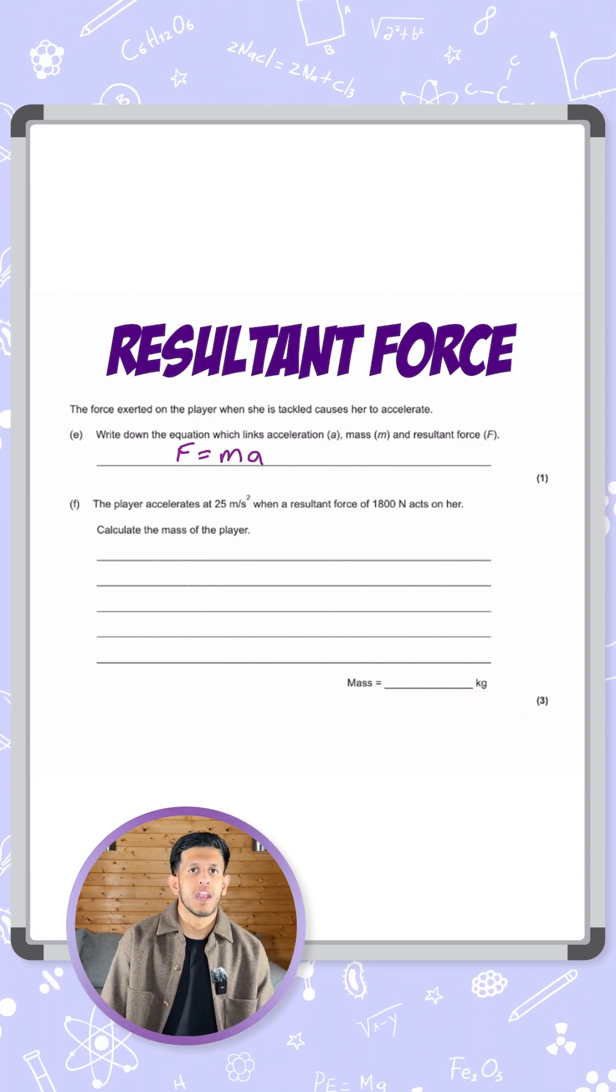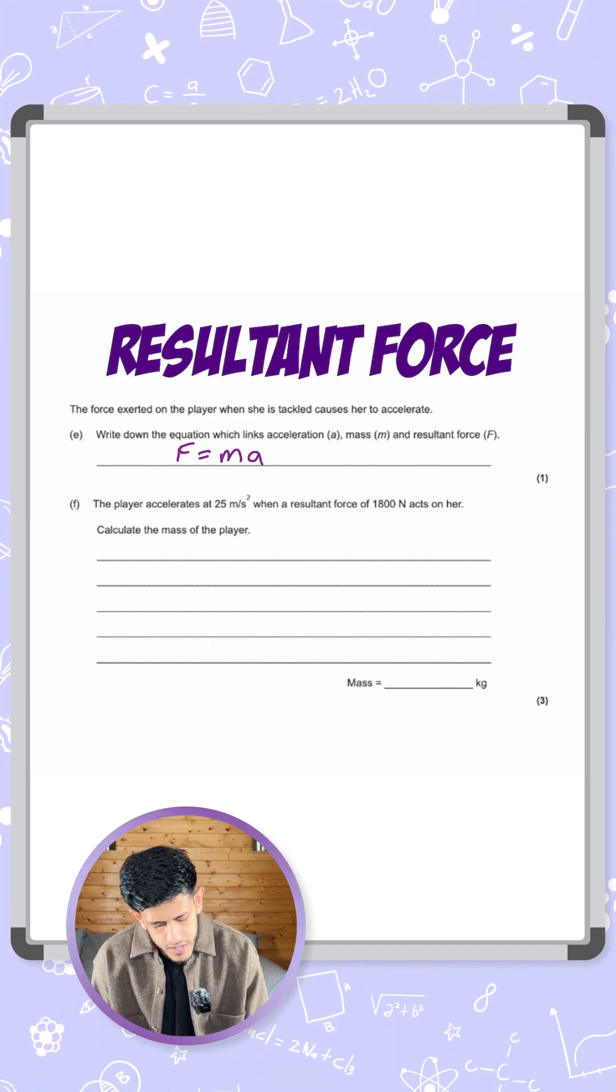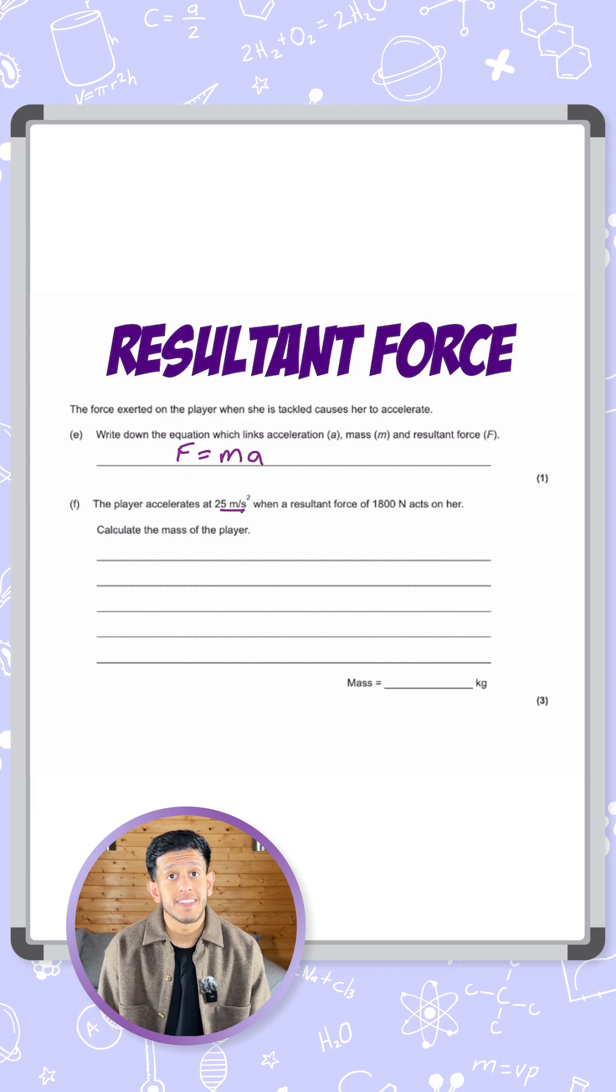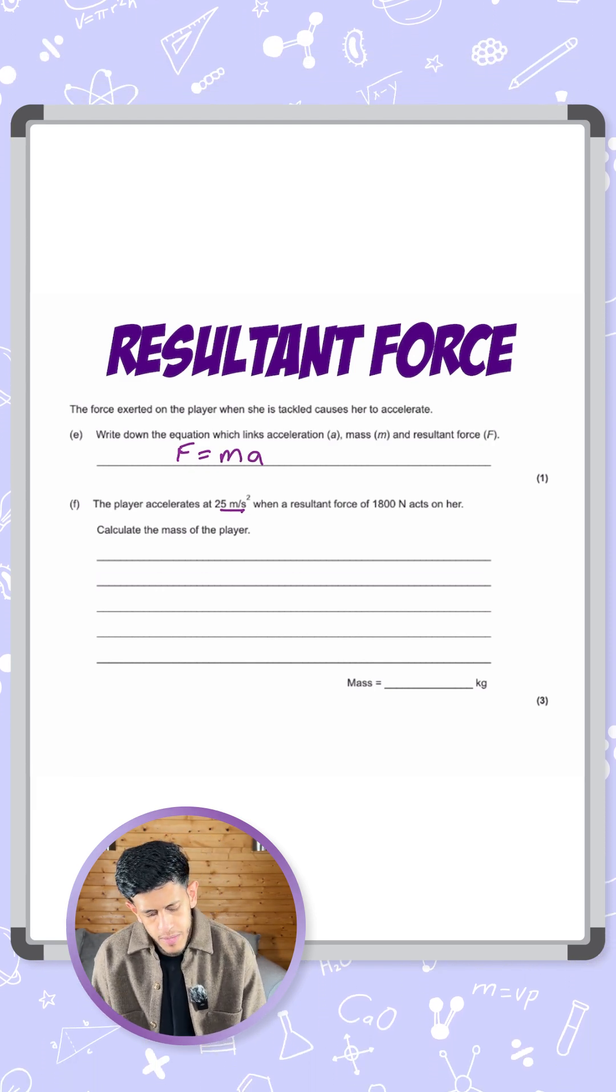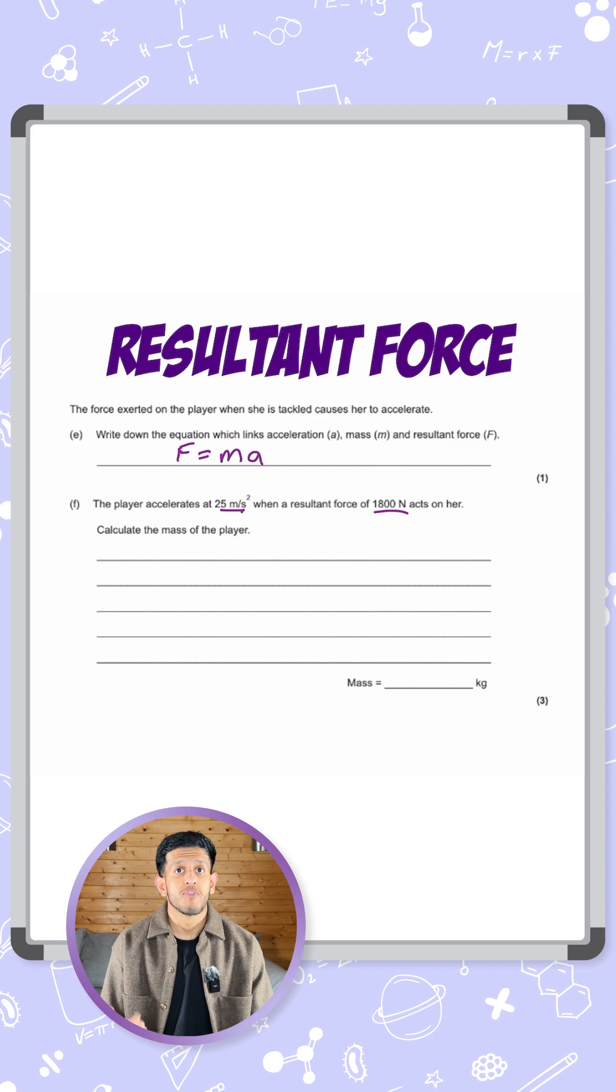So now I'm just going to highlight what I do know and what I don't know so I can use the equation correctly. We can see it mentions 25 meters per second squared, we know that's an acceleration, so we've got a. And then we've got a resultant force in newtons, 1800, so we've got f.